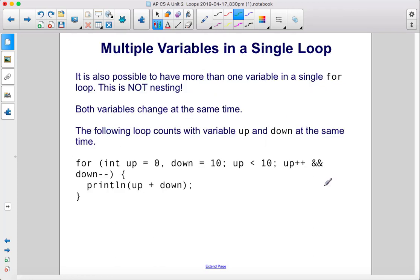It is also possible to have more than one variable in a single for loop. This is not nesting.